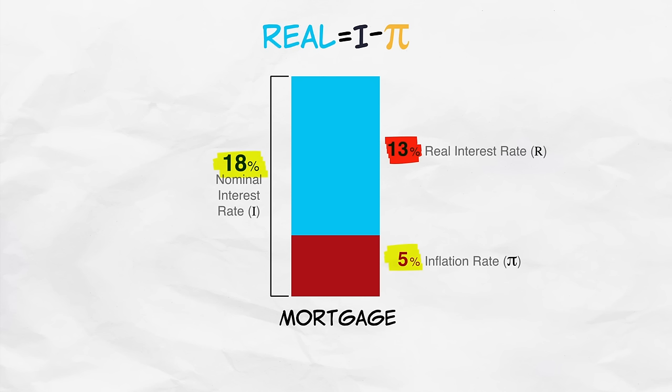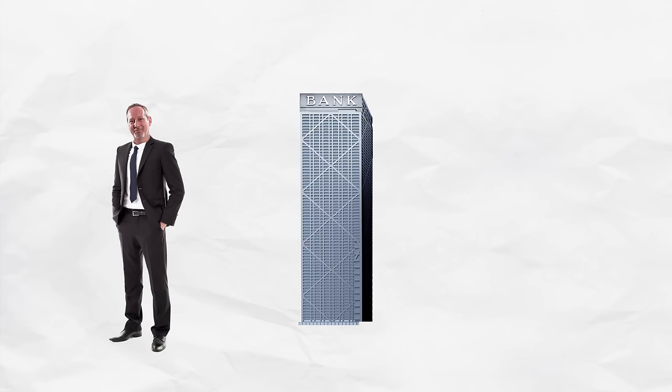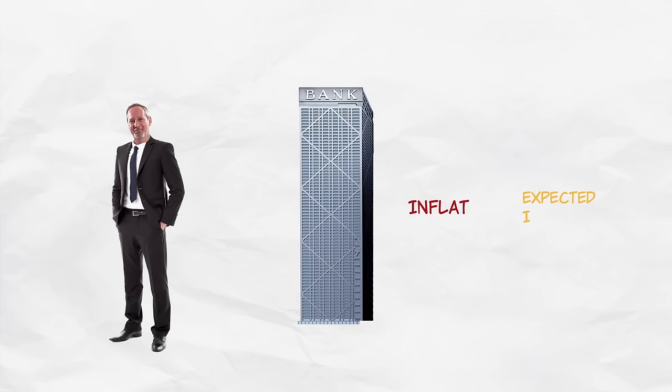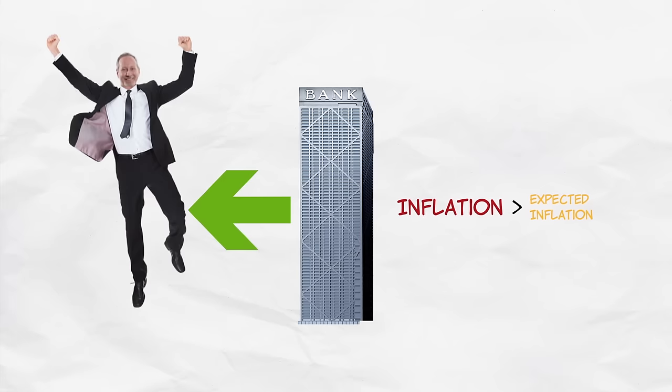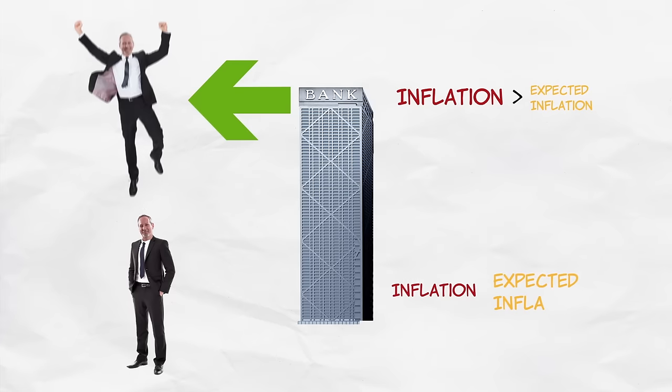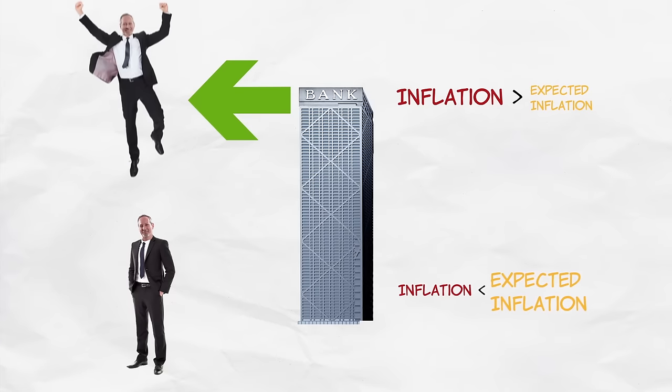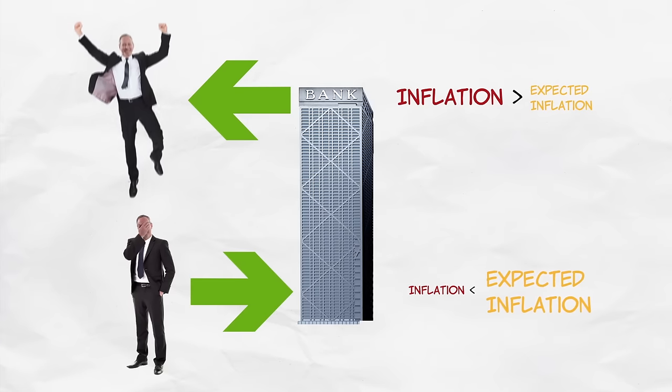So summarizing: when inflation is higher than expected, wealth is transferred from lenders to borrowers. But when inflation is lower than expected, wealth is transferred from borrowers to lenders. Now imagine that inflation is high and volatile, so it's difficult to predict whether the inflation rate will go up or down.